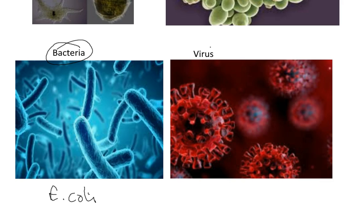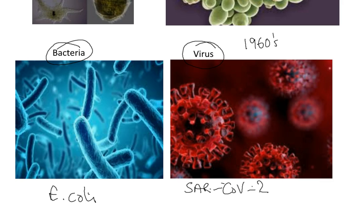A group which Leeuwenhoek did not see were the viruses. The viruses were not seen until the 1960s with the invention of the electron microscope. In this image is a virus known as SARS-CoV-2. This is the virus that is the cause of the disease COVID-19.